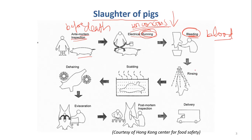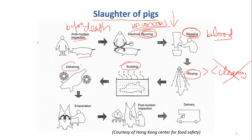The next step is rinsing — rinsing is not cleaning; it's using a spray of water to rinse the surface. Then scalding, which is a heat treatment step that heats the whole body of the pig to loosen the hairs. So the next step is de-hairing — to remove the hair of the pigs. But before that, we need to do scalding, we need to heat up.